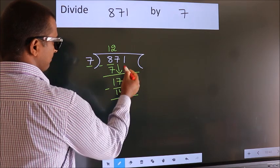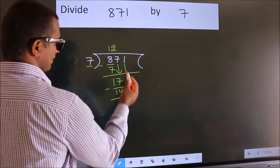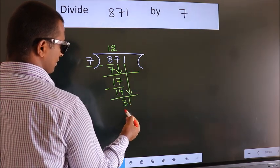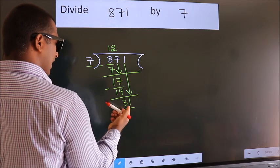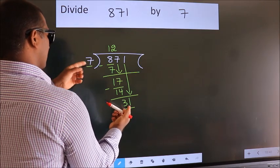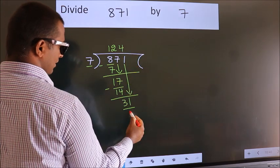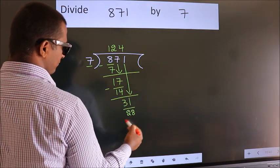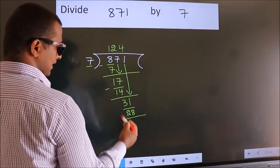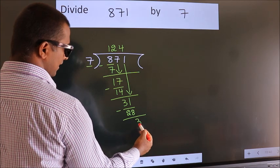After this, bring down the beside number. So 1 down, making 31. A number close to 31 in the 7 table is 7 times 4 equals 28. Now we subtract. We get 3.